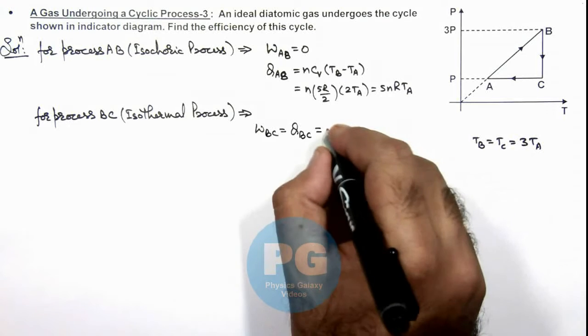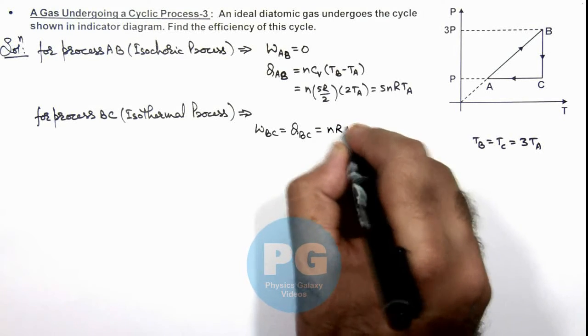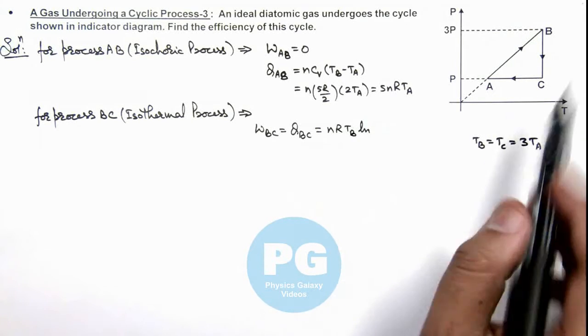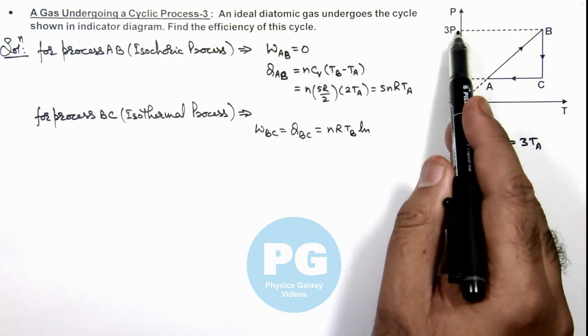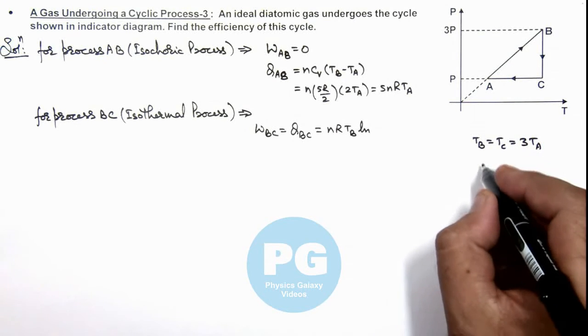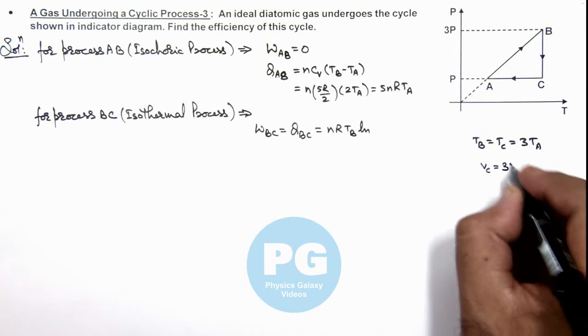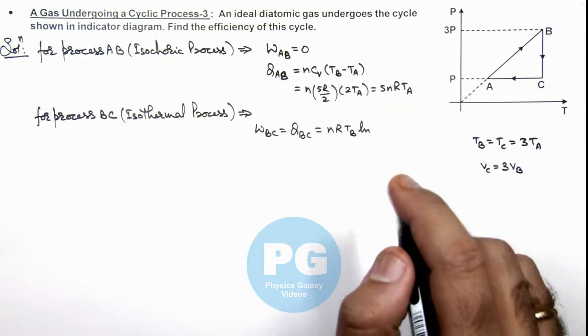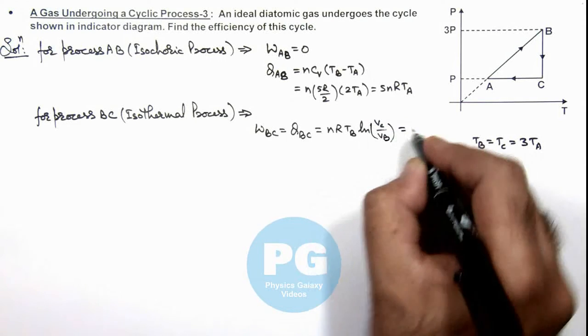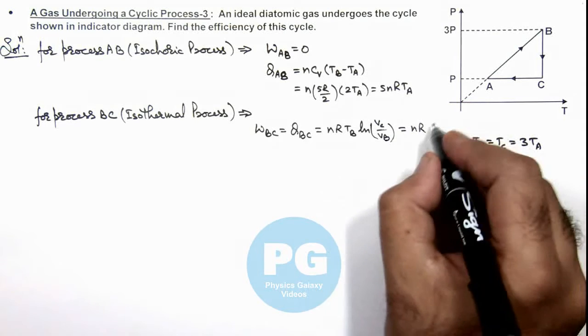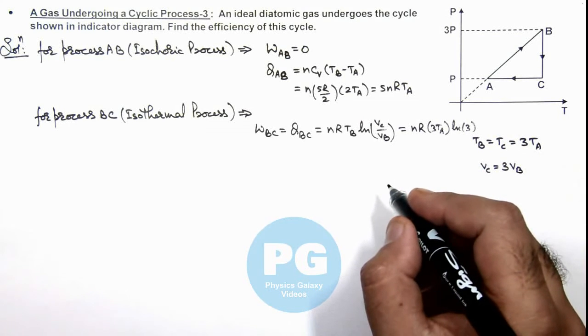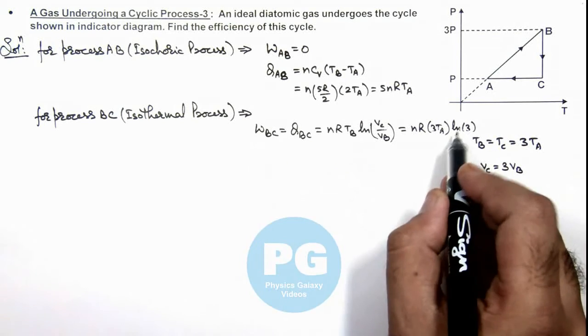Which can be directly given by the relation nRTB ln of v final by v initial. Here we can see in the process BC, as temperature is constant and pressure is reduced to 1/3 of the initial value, that means volume will increase to 3 times. Here we can write VC will be equal to 3 times VB, as pressure is 1/3 of VB. So ln of, we can write VC upon VB. So this can be given as nRTB, we can write as 3TA, multiplied by ln 3. So this is the value of heat supplied as well as work done we are getting in the process BC.